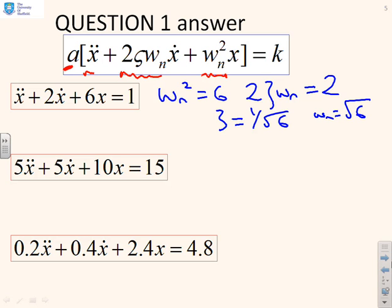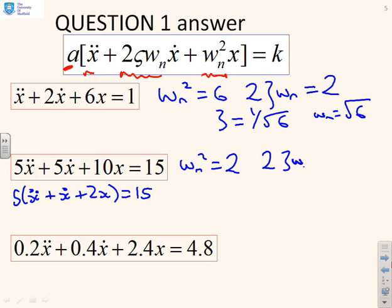What about the next one? Well, in order to make it monic, I'm going to take the 5 outside and write this as ẍ + ẋ + 2x = 15. And now I can see straight away, ω_n squared equals 2, and 2ζω_n equals 1. And so, therefore, ζ equals 1 over 2 root 2.